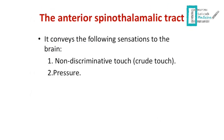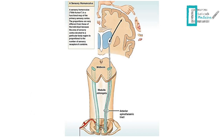Moving on to the anterior spinothalamic tract, which carries two sensations: non-discriminative or crude touch, and the sensation of pressure. The first order neuron is within the dorsal root ganglion, and its axon enters through the posterior grey horn, synapses with the second order neuron in the substantia gelatinosa. The second order neuron crosses to the other side and moves up in the anterior column to the medulla oblongata, where it joins the lateral spinothalamic tract and spinotectal tract. It then synapses with the third order neuron in the thalamus, which travels through the internal capsule to reach the sensory cortex.